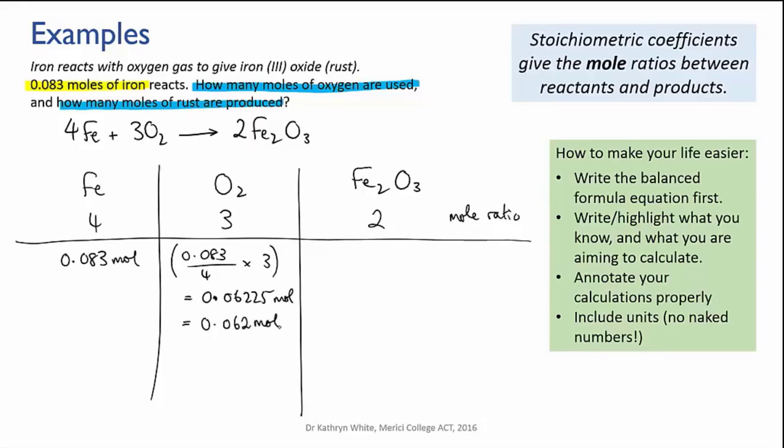To find the number of moles of rust, we take the moles of iron and again divide by four. But now we multiply by two for the two parts of iron oxide. And this tells us that 0.0415 moles of iron oxide are produced, or 0.042 moles when we round to two sig figs.